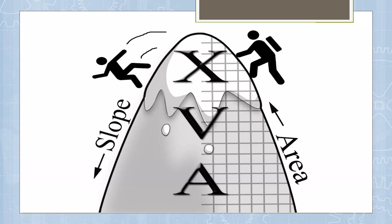As you climb that mountain from A to V to X, you use the area. This is why the area underneath a velocity versus time graph gives us our displacement. As you go down that mountain from X to V to A, you use the slope. You can take the slope of a velocity versus time graph to get acceleration, take the area under the curve to get displacement, or just read the points. This makes the velocity versus time graph kind of king of the mountain — it can tell you the most information.